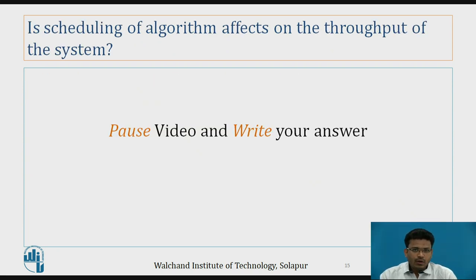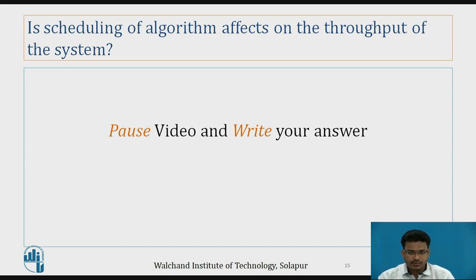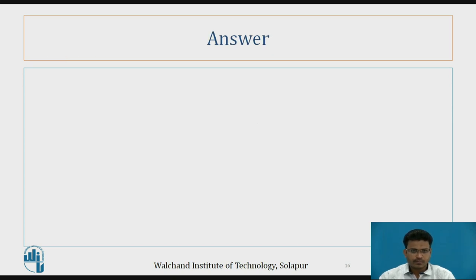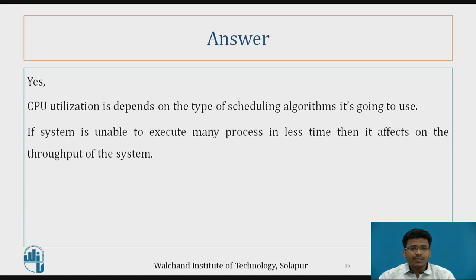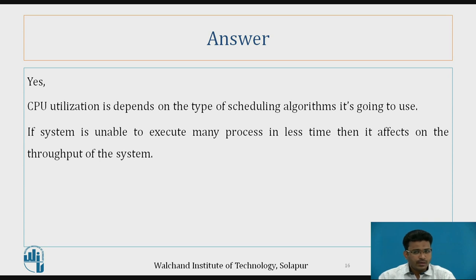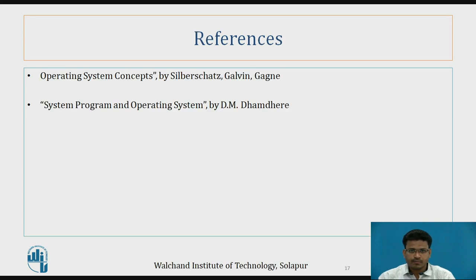Each scheduling algorithm affects the throughput of the system. CPU utilization depends on the type of scheduling algorithm used. If the system is unable to execute many processes in less time, it affects the throughput of the system. References: Operating System Concepts by Galvin, and System Programming and Operating Systems. Thank you.